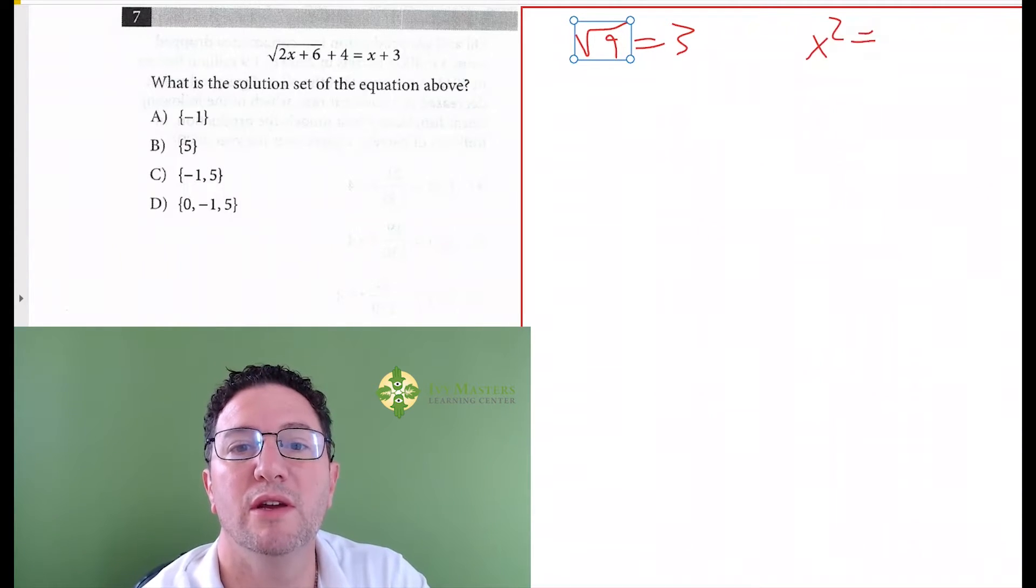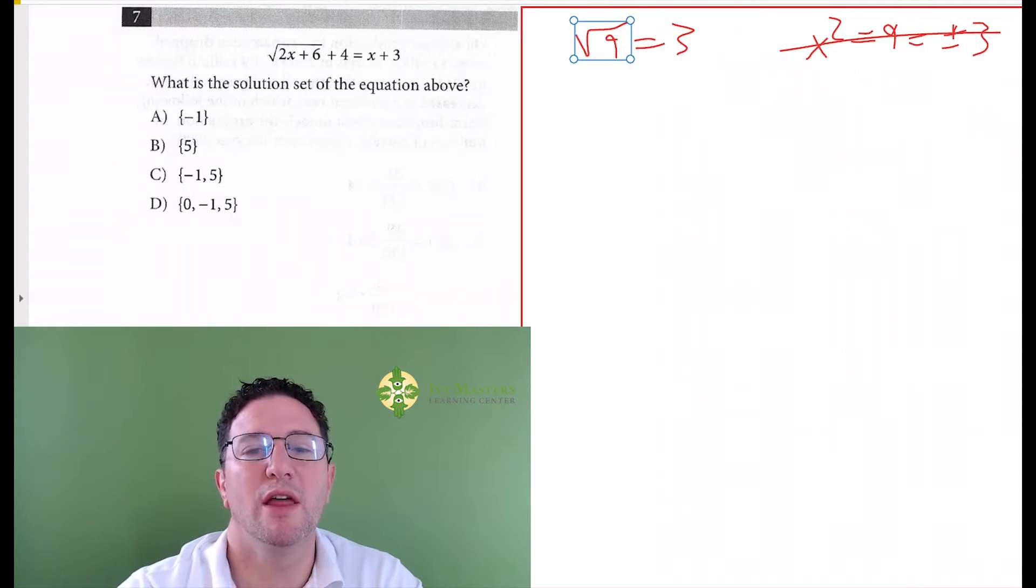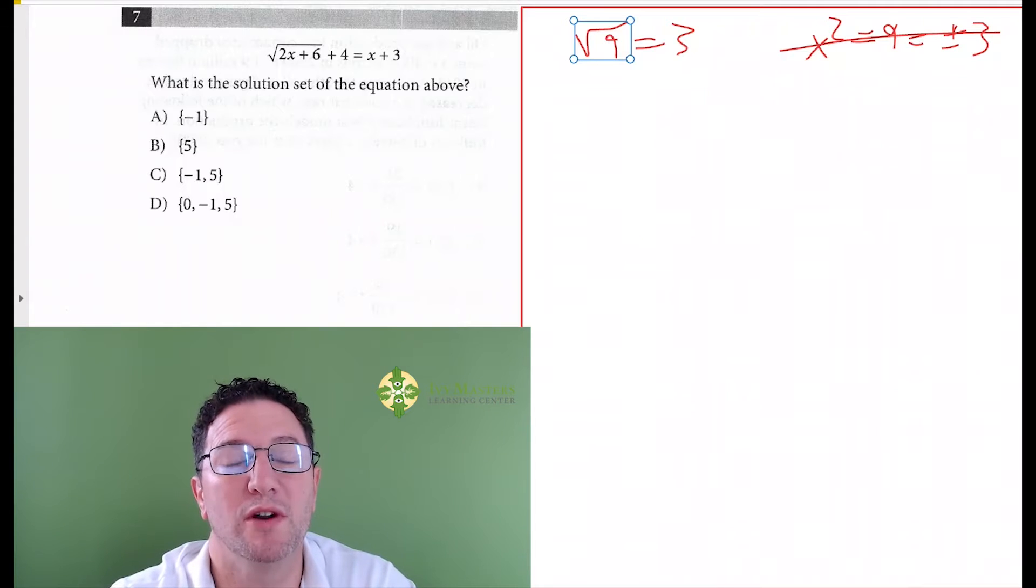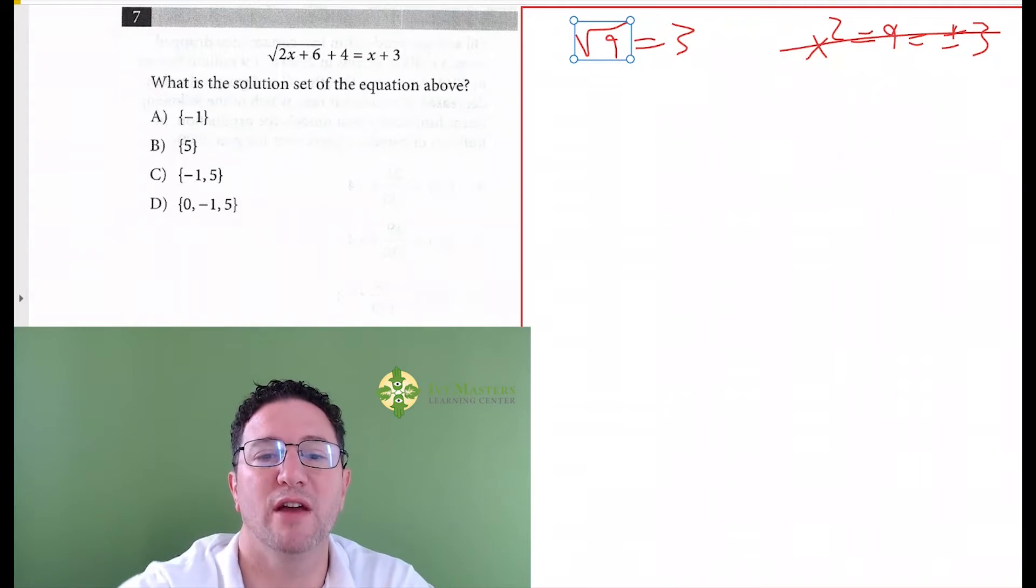Another thing you want to keep in mind is that the square root of 9 is positive 3 only. Now if you have x squared equals 9, then that answer is plus or minus 3, but this does not apply to this question, which we're going to get to. Another thing: you want to eliminate imperfect squares, so if you put something in square root that's not a perfect square, that's going to be gone as well.